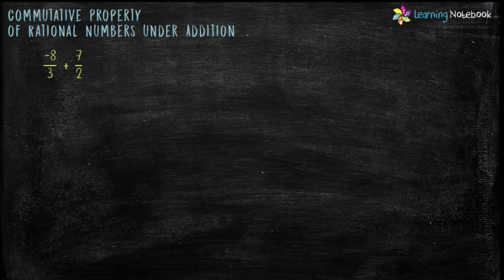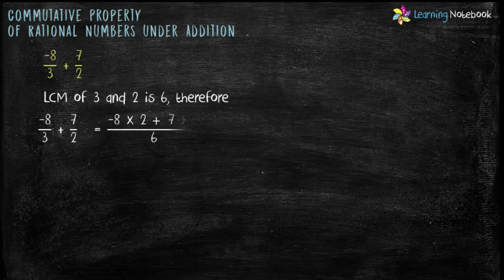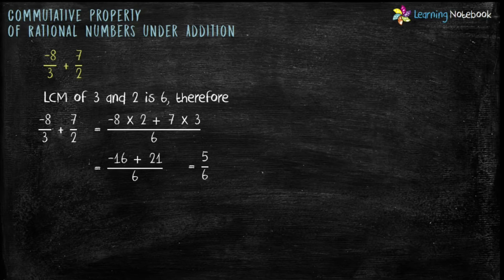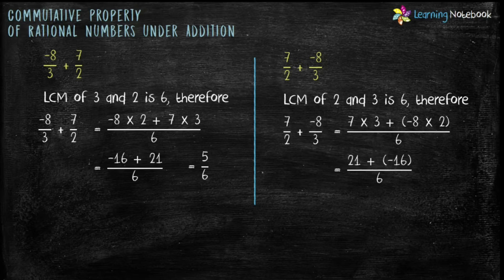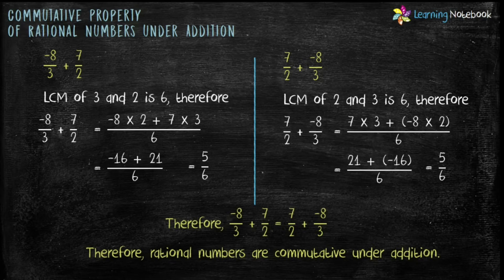Let's take another example. Add rational numbers minus 8 by 3 and 7 by 2. LCM of 3 and 2 is 6. Therefore, we get minus 8 into 2 plus 7 into 3 by 6. Solving, we get minus 16 plus 21 by 6, which is equal to 5 by 6. Now, let's reverse the order of these two rational numbers and add them. LCM of 2 and 3 is 6. Therefore, we get 7 into 3 plus minus 8 into 2 by 6, which is equal to 21 plus minus 16 by 6. So the sum comes out to be 5 by 6.